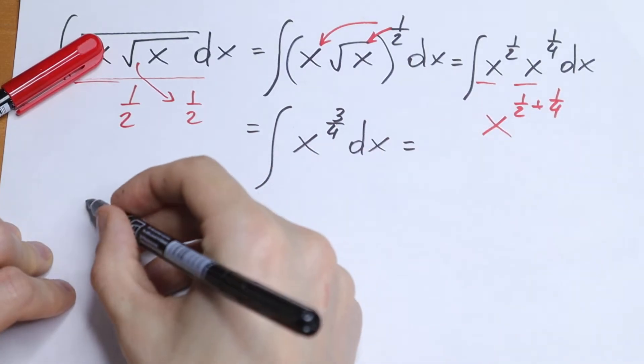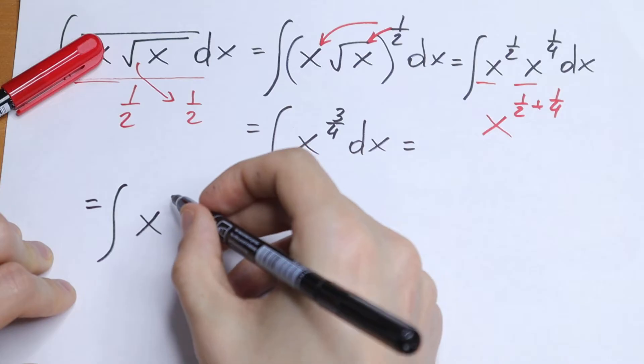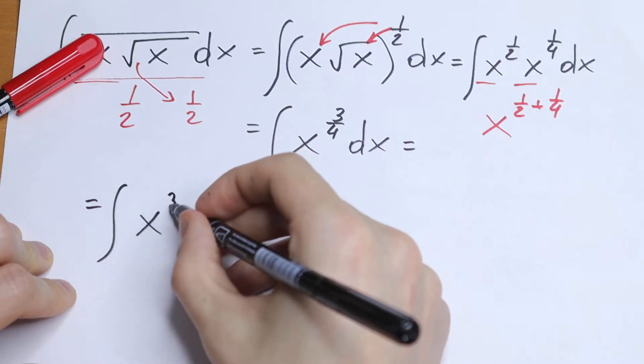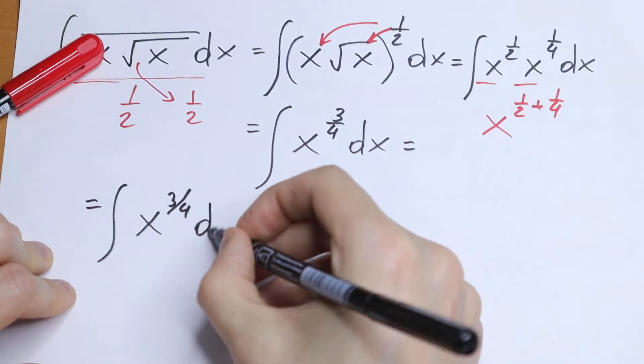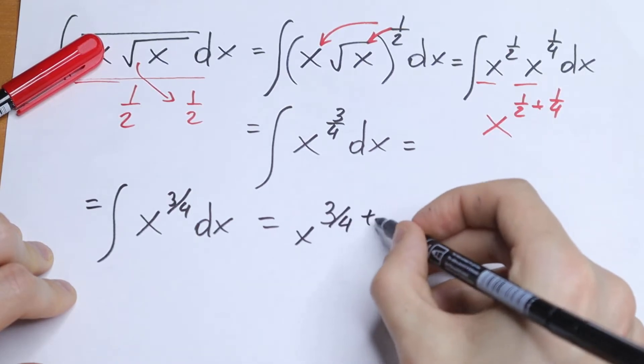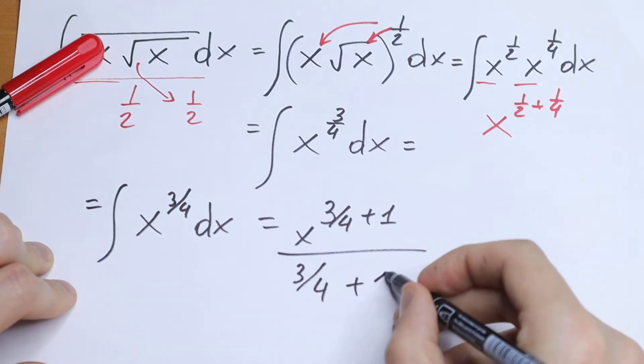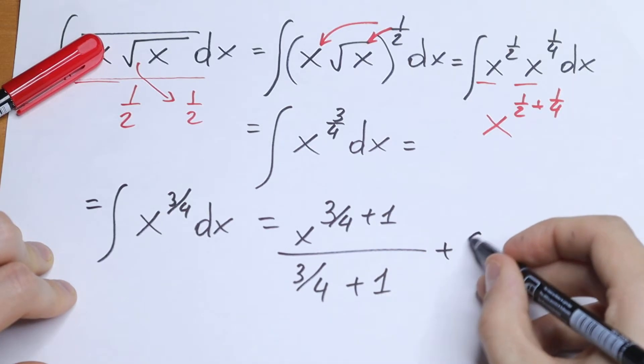We find using the rule that we know, x to the power 3 fourths dx integrates to x to the power 3 fourths plus 1, and we divide by this 3 fourths plus 1, and plus c.